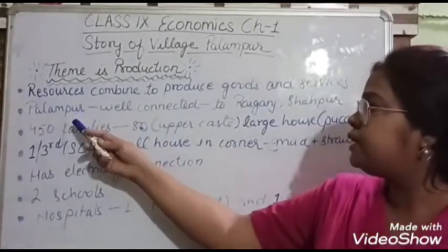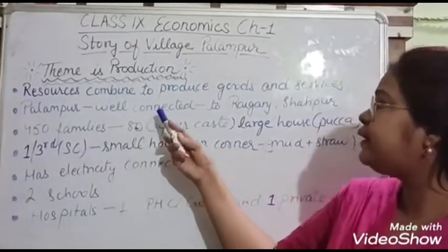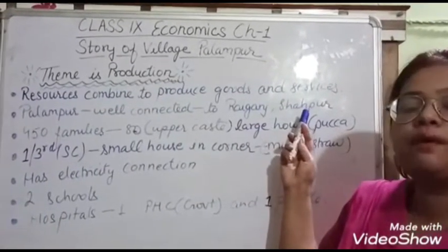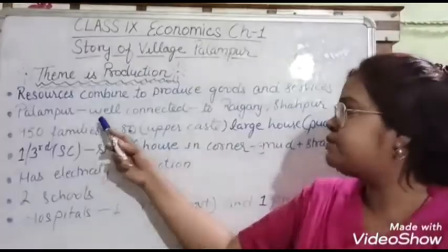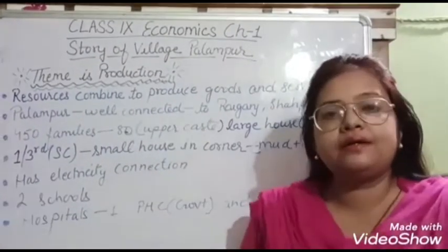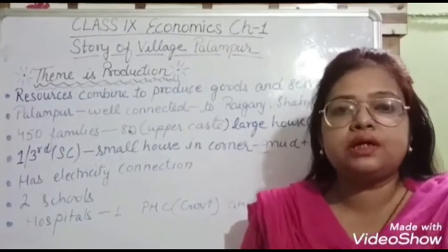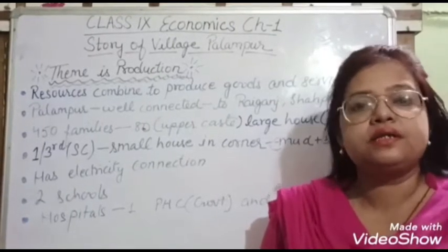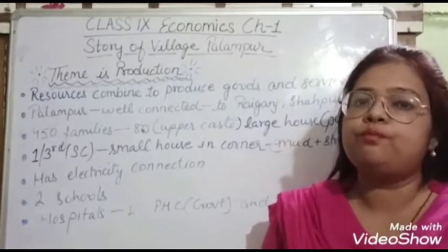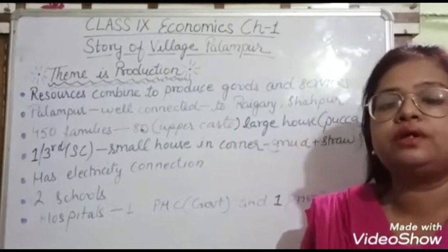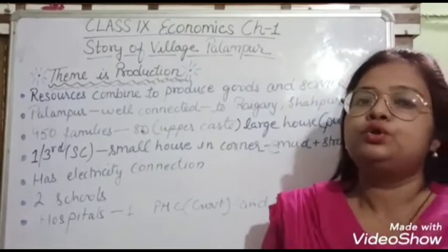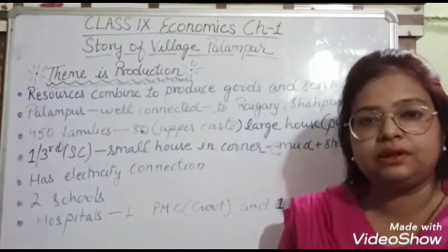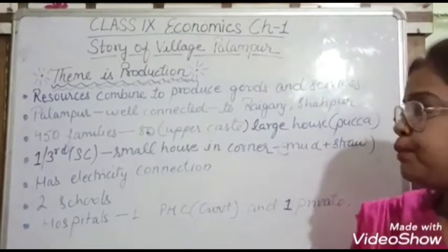The second point: Palampur, the name of the village, is well connected to the neighboring cities — Rajganj and Shahapur. This small village of Palampur is well connected, meaning the roads are in very good condition, transport facilities are good, and it is easy to travel and move from Palampur to the cities. There is a good connection of roads and transport to these nearby neighboring cities.